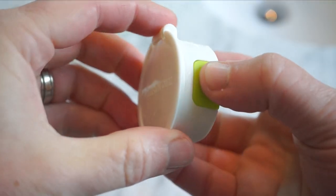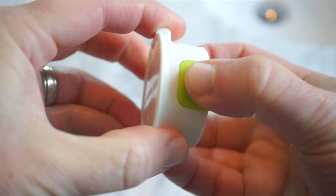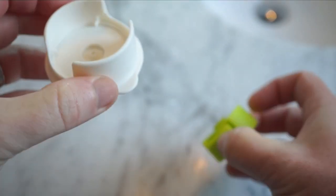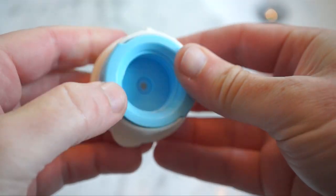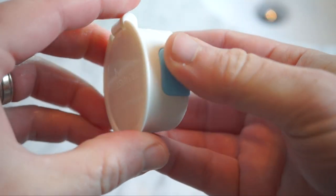Now, what's particularly smart about this cap is that it comes with two fittings that should accommodate most standard bottle types. By squeezing the colored edges on the sides, you can swap out one fitting for another.